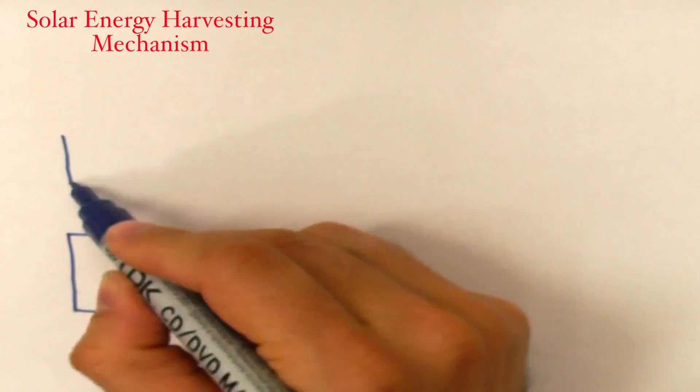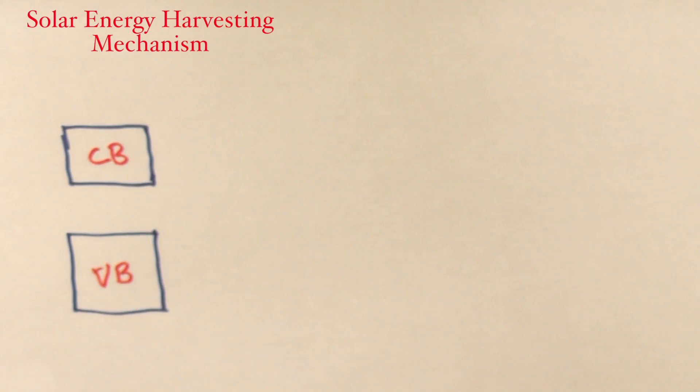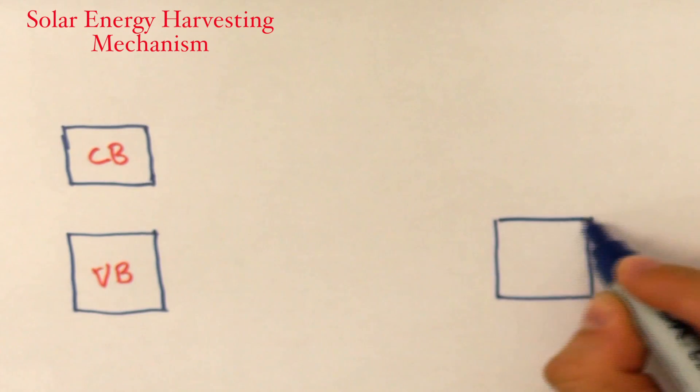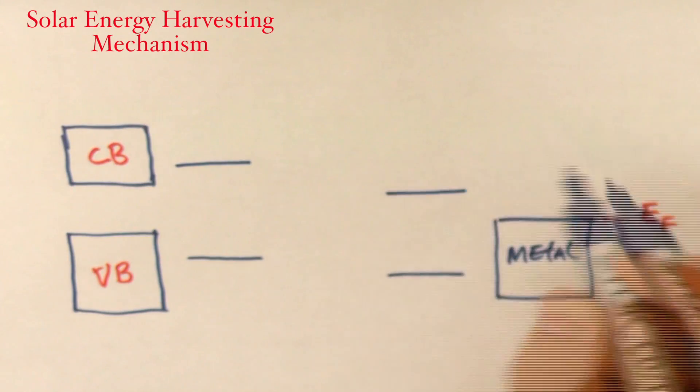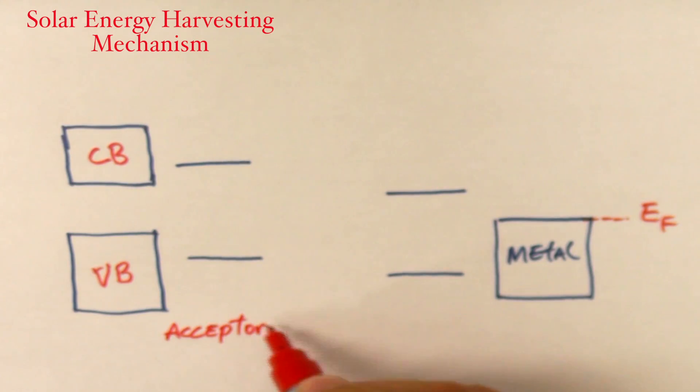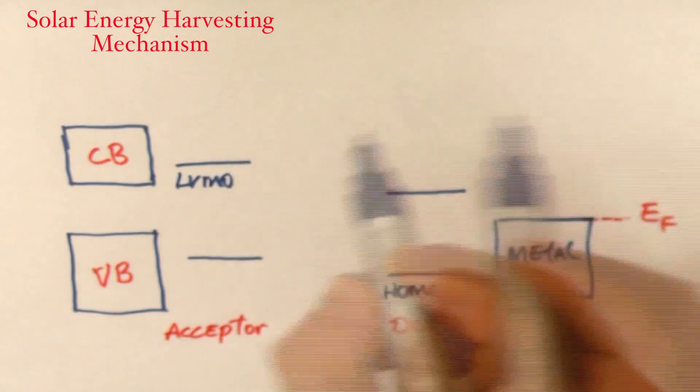In terms of energy diagram, the semiconductor electrode can be represented by its valence band and conduction band, whereas the metallic electrode is represented by its Fermi energy. The donor and acceptor molecules are represented by their highest occupied molecular orbital, HOMO, and the lowest unoccupied molecular orbital, LUMO.